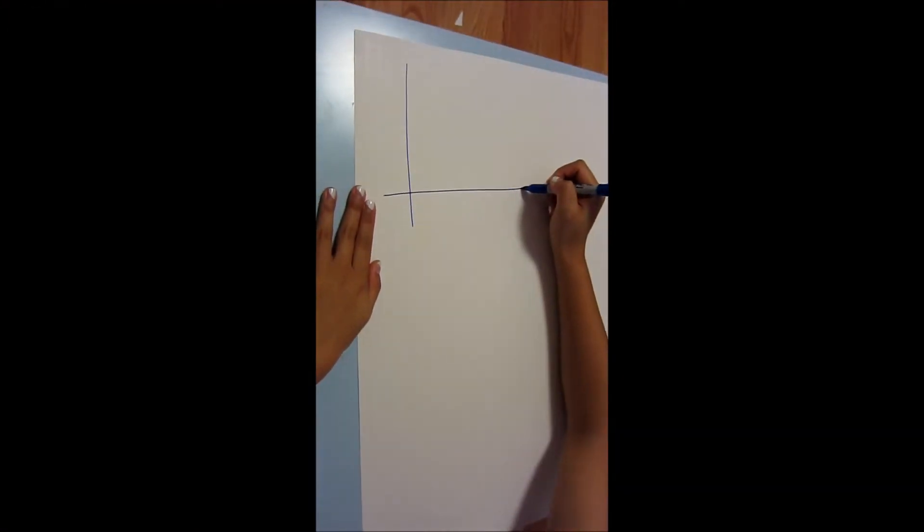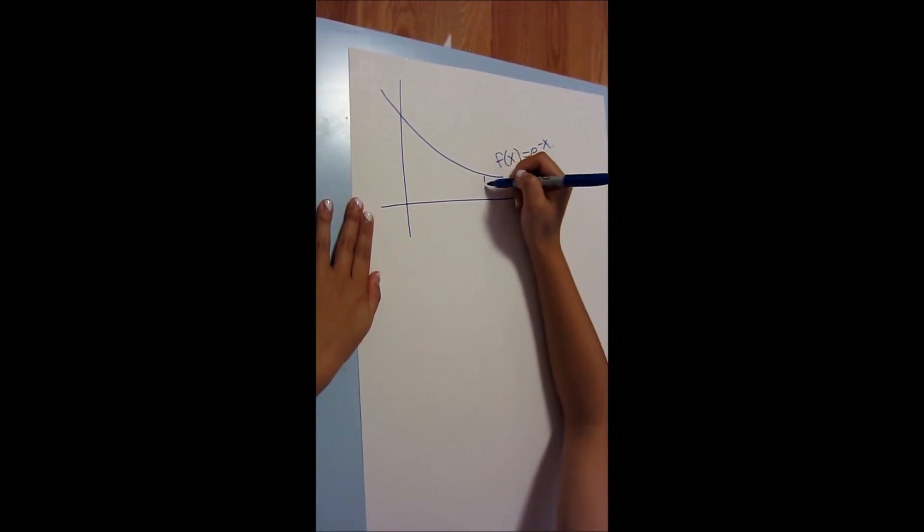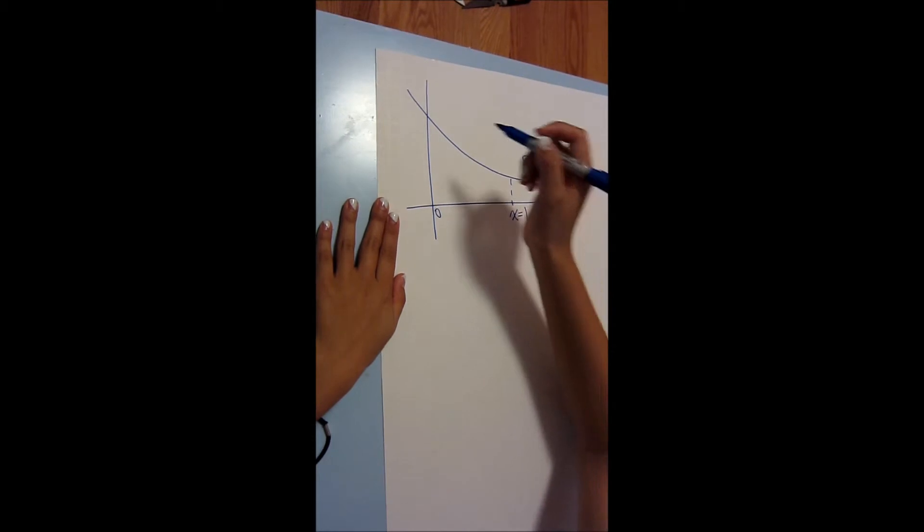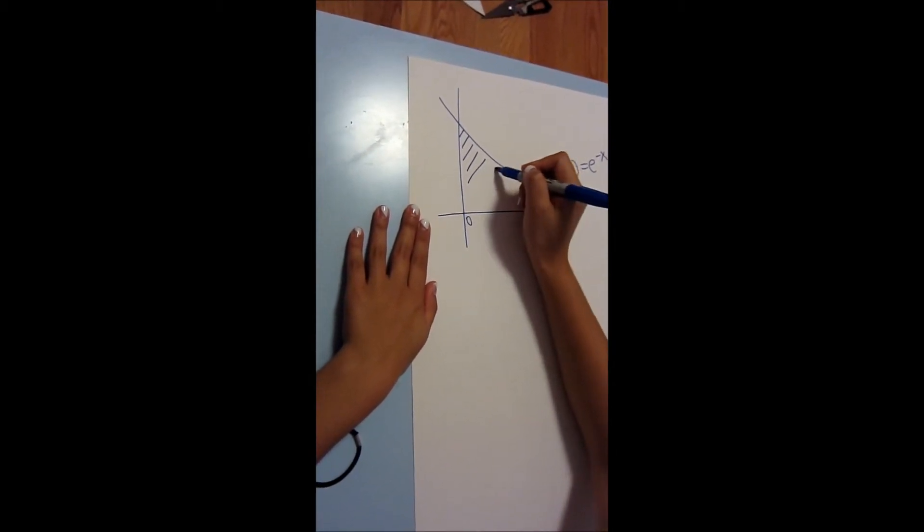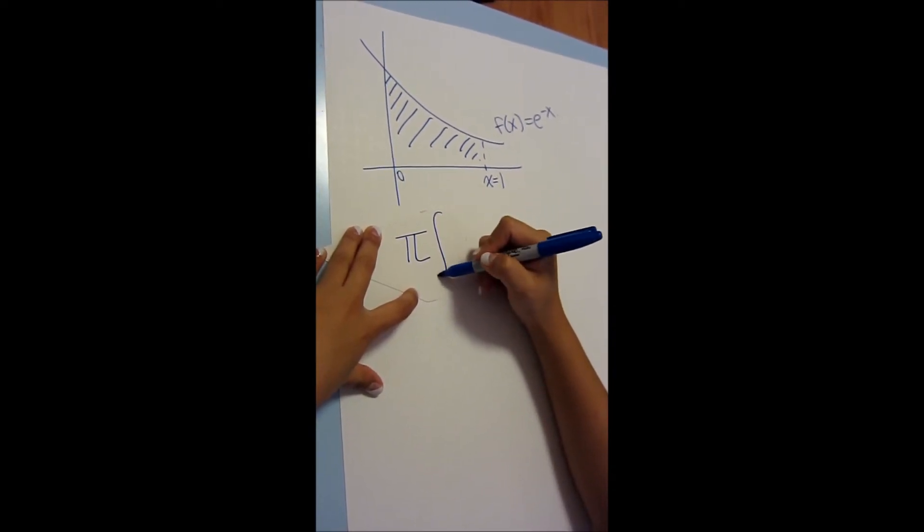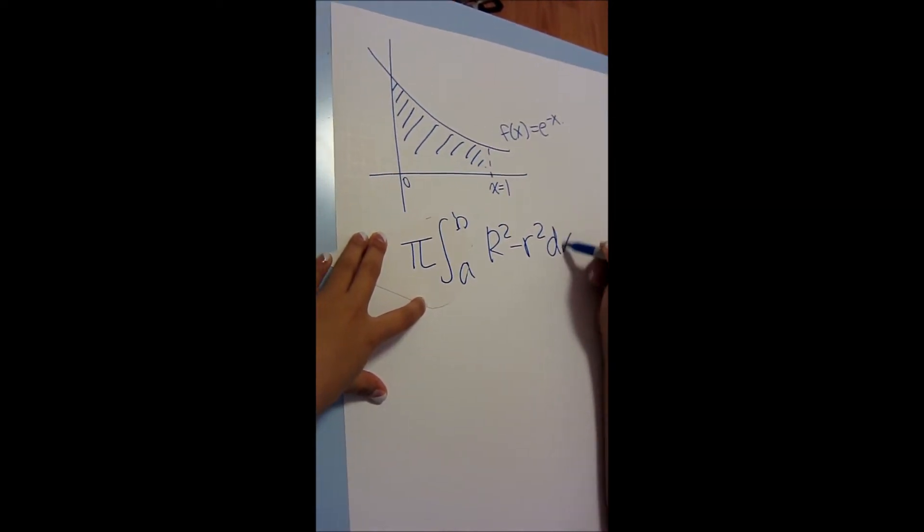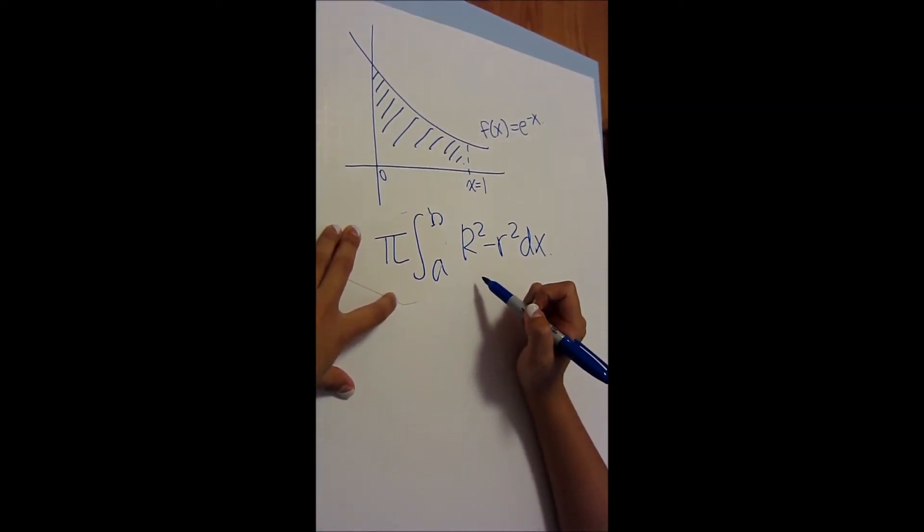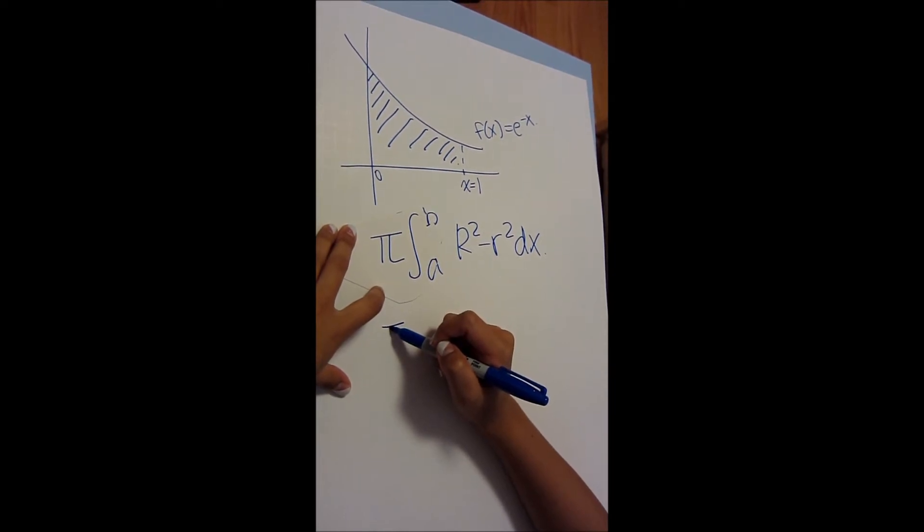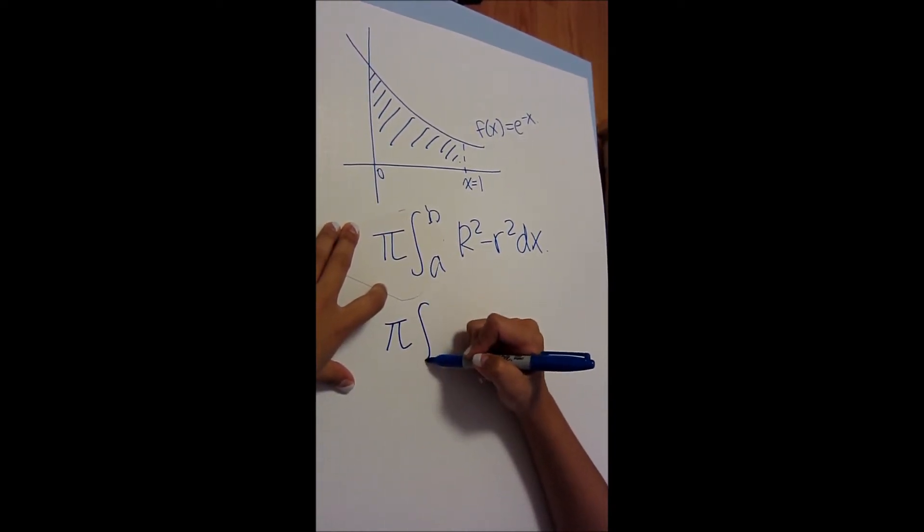Let's start with a simple function. Say you have the function e to the negative x. It's a graph like that, and say you want to find the volume of the region bounded by the curve e to the negative x and the x-axis between x equals 0 and x equals 1. The formula for the disc and washer method is pi integral a to b, big R squared minus little r squared dx. Big R is the outer radius, and little r is the small radius. In this case, the big radius is the function e to the negative x, and the little radius is the x-axis, which is 0. So for this particular problem, you do pi integral 0 to 1, e to the negative x squared minus 0 squared dx.